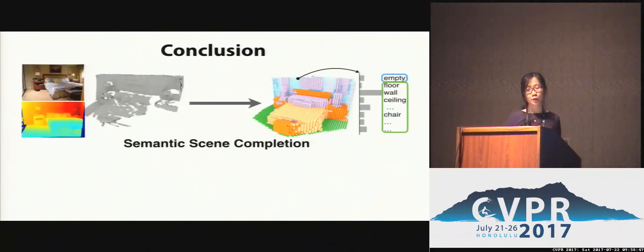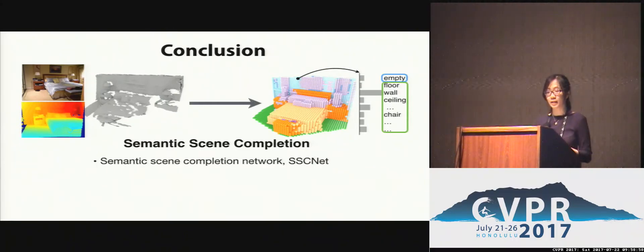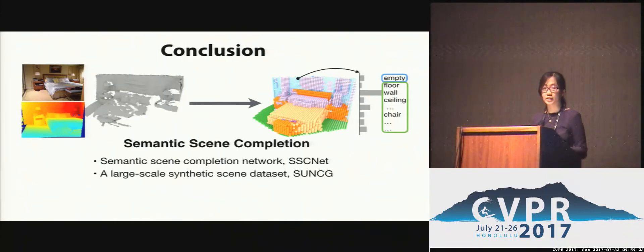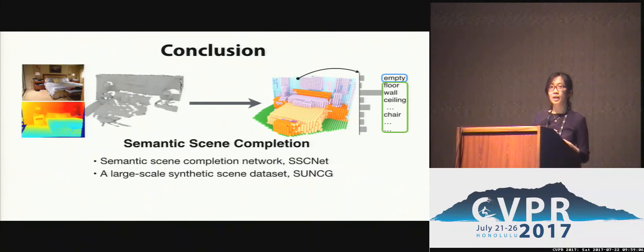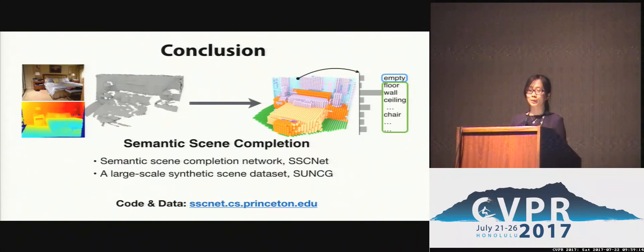To sum up, in this paper we introduced the task of semantic scene completion that simultaneously predicts voxel occupancy and semantic labels from a single depth image. We tackle this problem by introducing the semantic scene completion network SSCNet and the large-scale synthetic scene dataset SUNCG, which together enable end-to-end training for this task. The code and data are already available online.